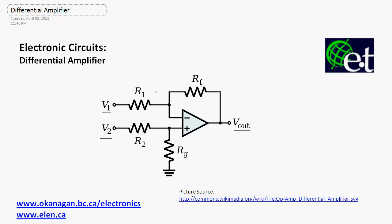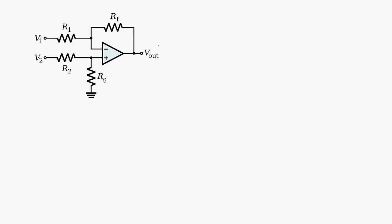What I want to show you is how that relationship comes about. So here's my circuit. In order to show how the output is proportional to the difference between V2 and V1, I'm going to make a couple of assumptions and assume that this op-amp is ideal. What that means — especially considering this one has feedback going from the output back to the inverting input — is that the voltage at the non-inverting terminal is going to be equal to the voltage at the inverting terminal.